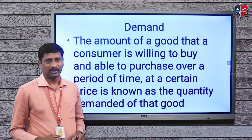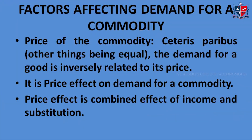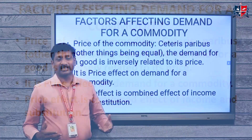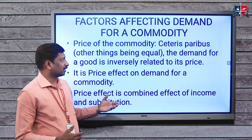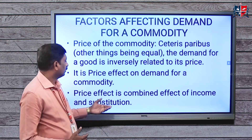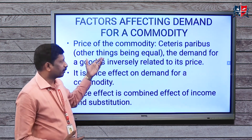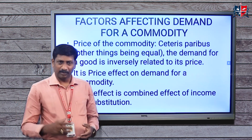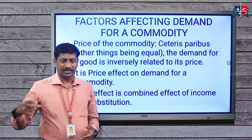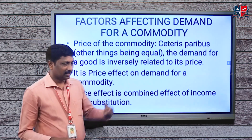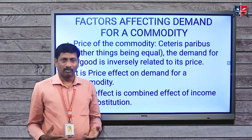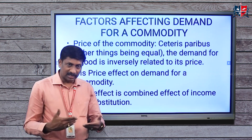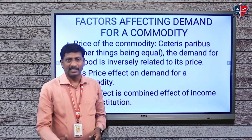Buyers determine the demand for a product and sellers determine the supply of the product. These two parties, buyers and sellers, are active in the market, determining the demand for a commodity and the supply of the commodity. These two are the major forces of the market. Today we have to concentrate on the term demand, so what is the meaning of demand?